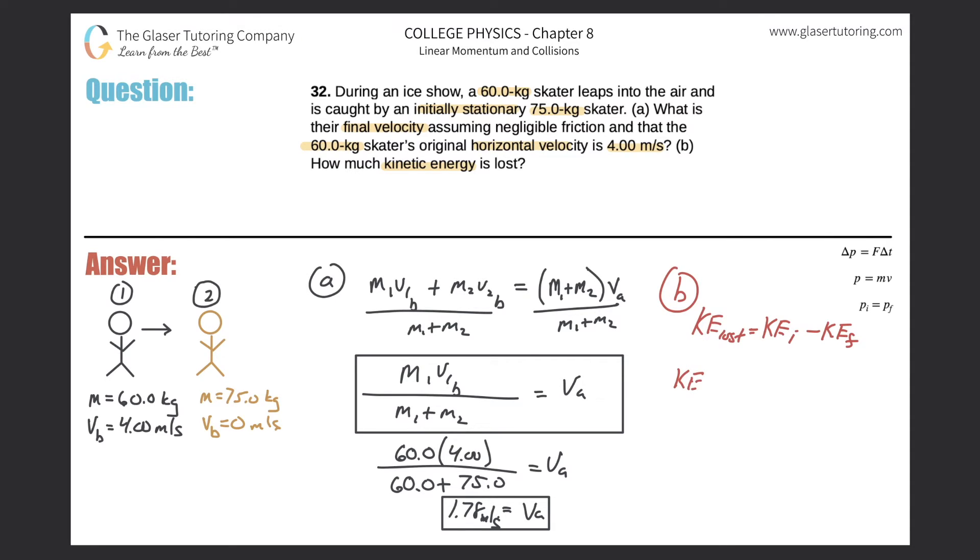the kinetic energy lost will be now 1 half mv initial squared minus 1 half mv final squared.